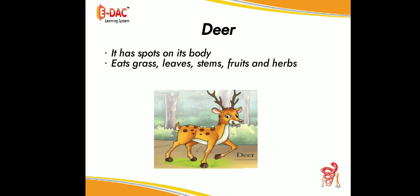Children, look at the picture and tell the name of the animal. Yes, it is a deer. It has spots on its body, and it eats grass, leaves, stems, fruits, and herbs.